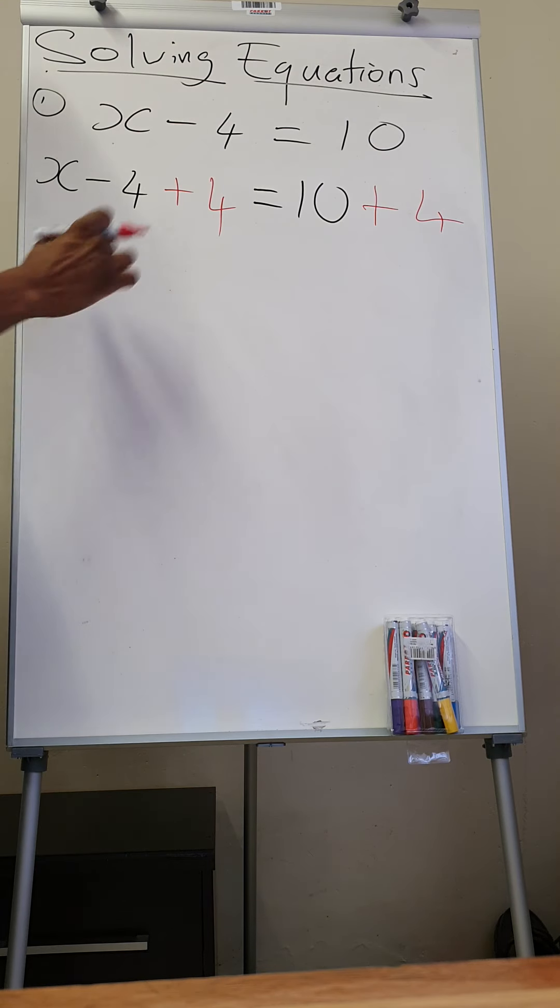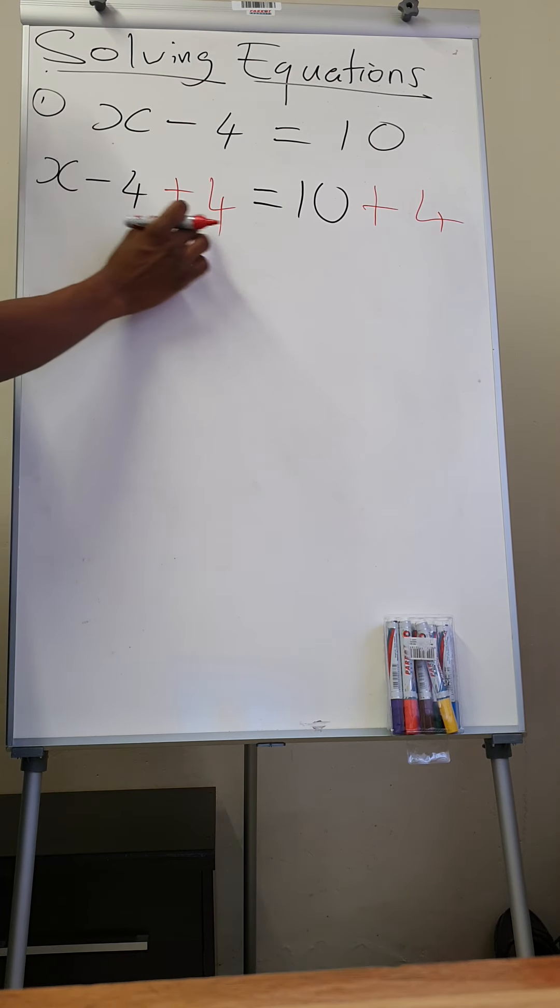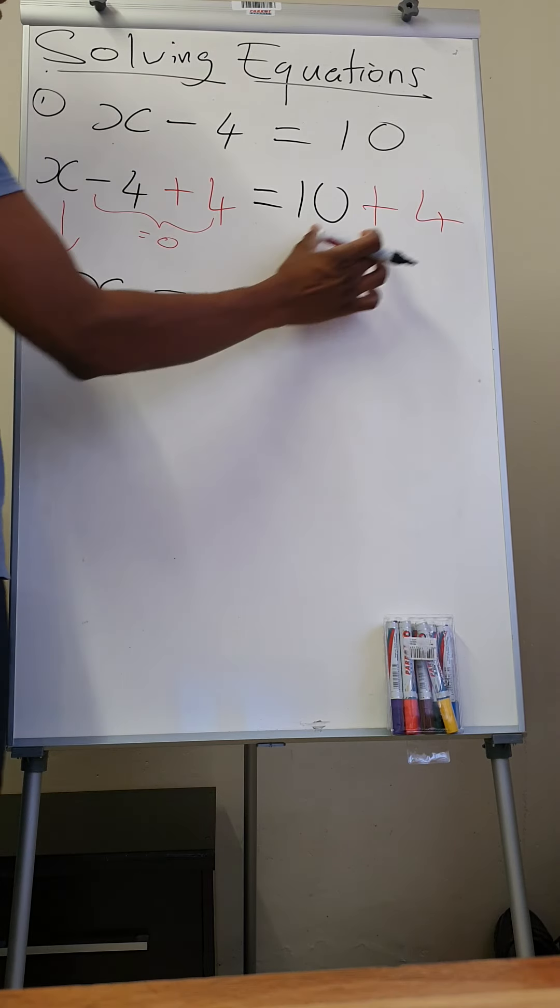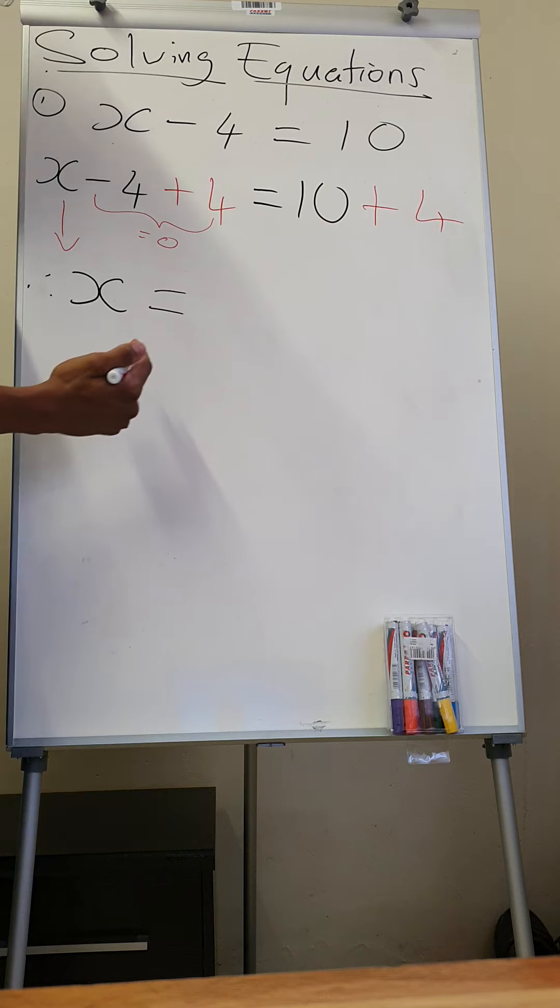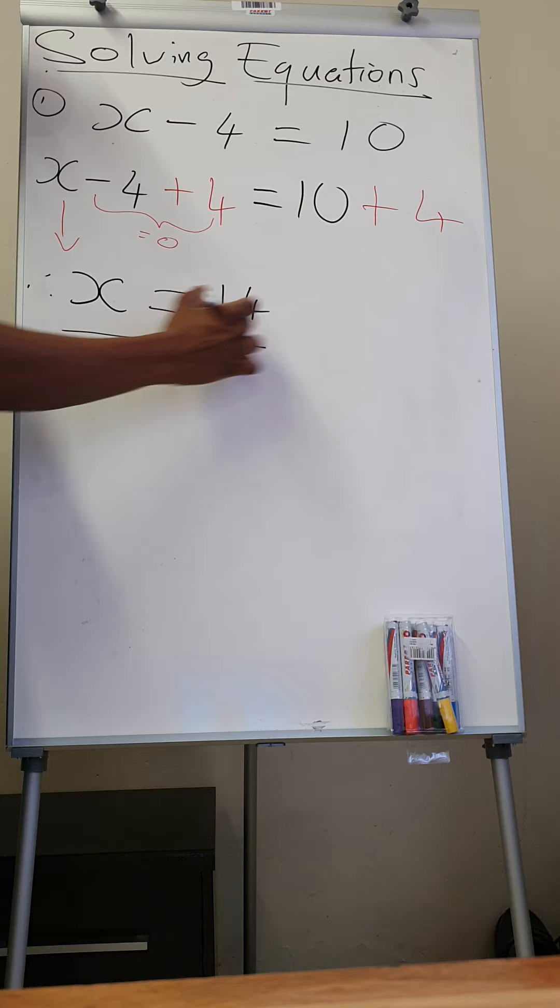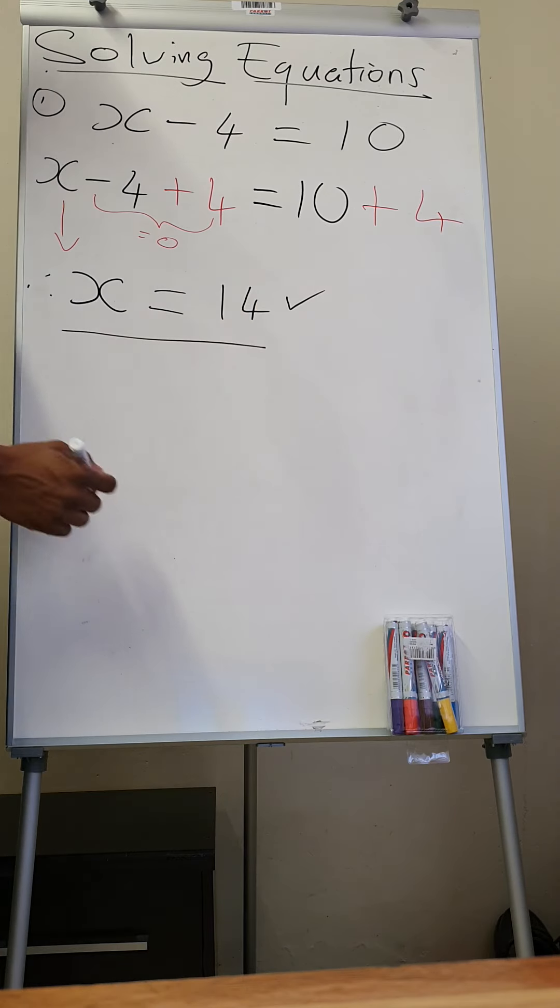So minus 4 plus 4, these are the same number but with different signs. So they're going to minus each other. This part alone is going to be 0. So it means you are left with x there only. It means x is therefore equal to 10 plus 4 is equal to 14. So therefore, x is equal to 14 there.